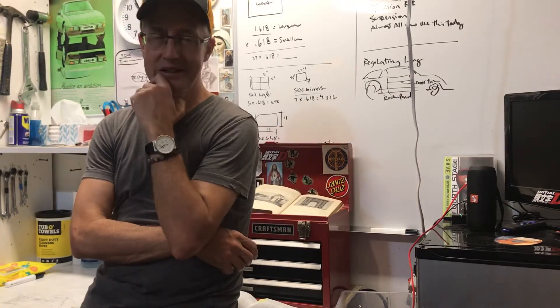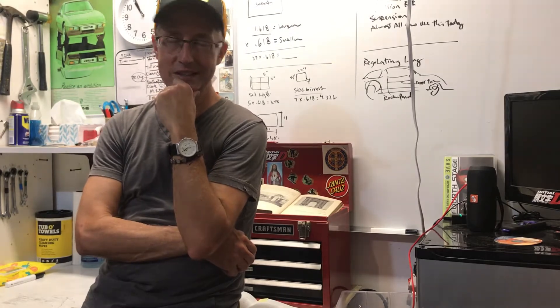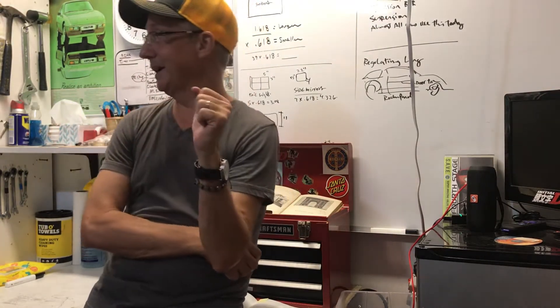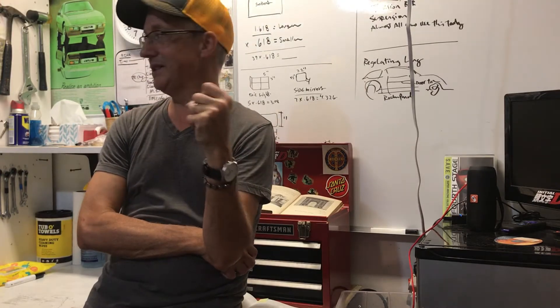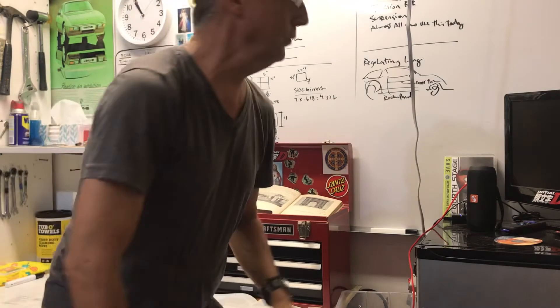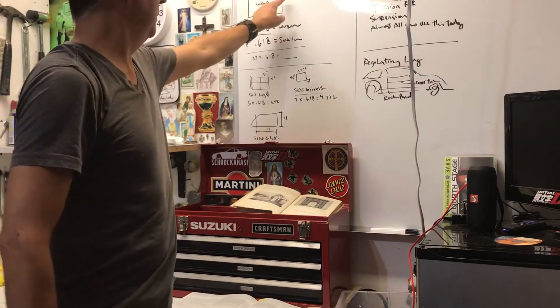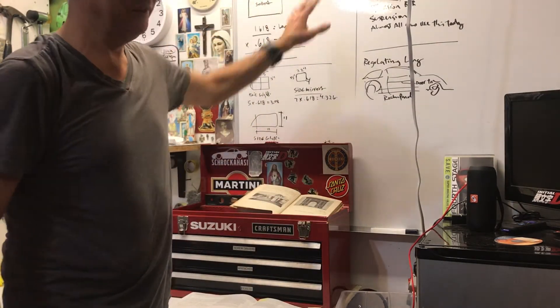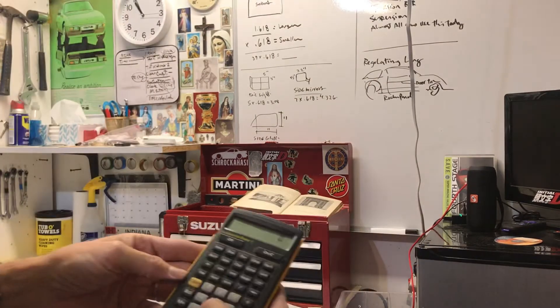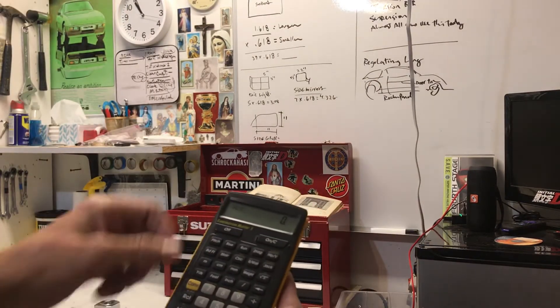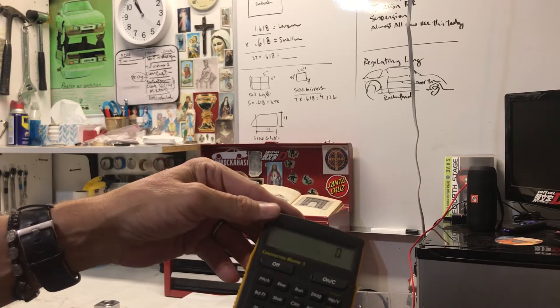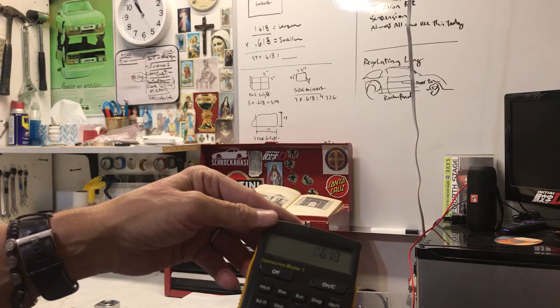When this came to mind, I grabbed my tape measure and started going around the car and measuring things. One of the first things I thought about was the actual sunroof. Why is this rectangular shape the way that it is? I measured it, and sure enough, when I went across this way, it measures 39 inches. So, let's do this right now, and I'll do it right in front of you. Golden ratio, remember 0.618, so 39 times 0.618.